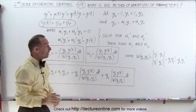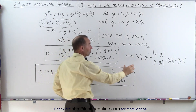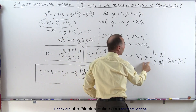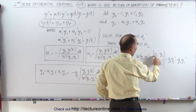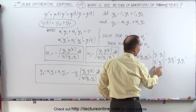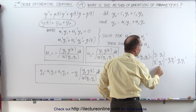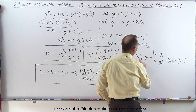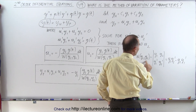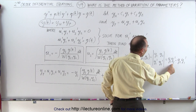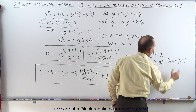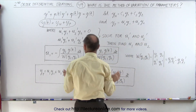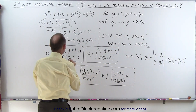The Wronskian is defined as the determinant with y1 and y2 on the first row and their derivatives y1' and y2' on the second row. This works out to W(y1, y2) = y1·y2' − y2·y1'. That expression goes in the denominator of the formula for u1.